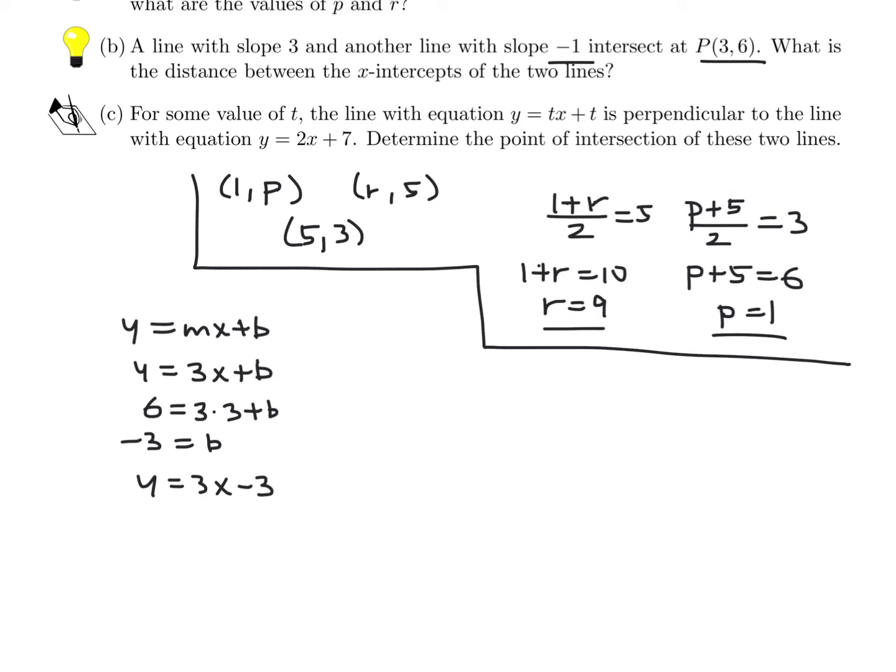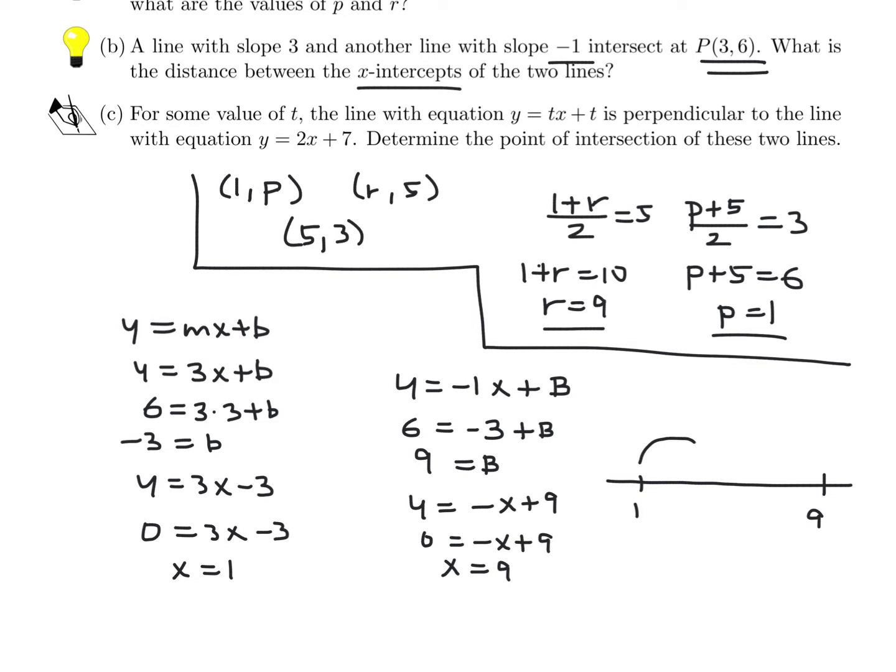The second equation is when the slope is -1. Same story, this will be -1x + b. Substitute this value. So 6 = -3 + b, and b is 9. So this equation is -x + 9. Now we want the x-intercepts. You get the x-intercepts by setting y to 0. Set y to 0 here, and you get x = 1. When you set y = 0 here, you get x = 9. They want the distance between 1 and 9, which is 8.